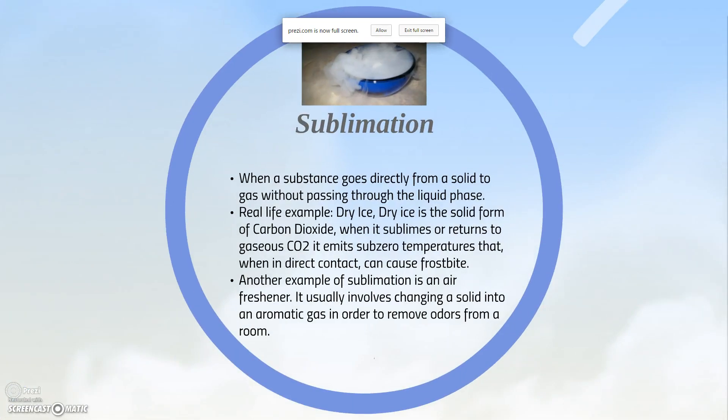Sublimation is when a substance goes directly from a solid to a gas without passing through the liquid phase. A real life example is dry ice — the solid form of carbon dioxide — when it sublimes or returns to gaseous carbon dioxide.